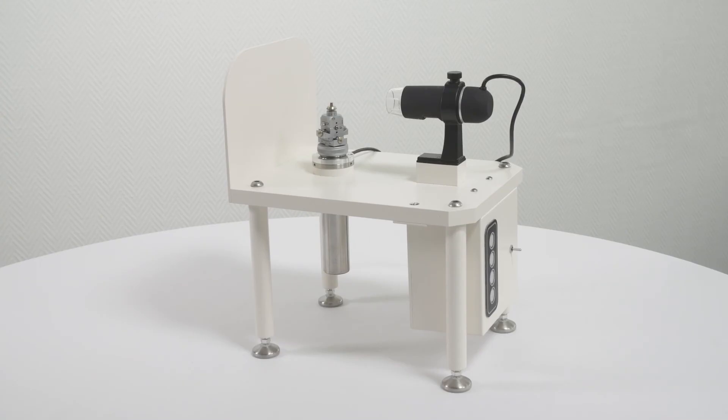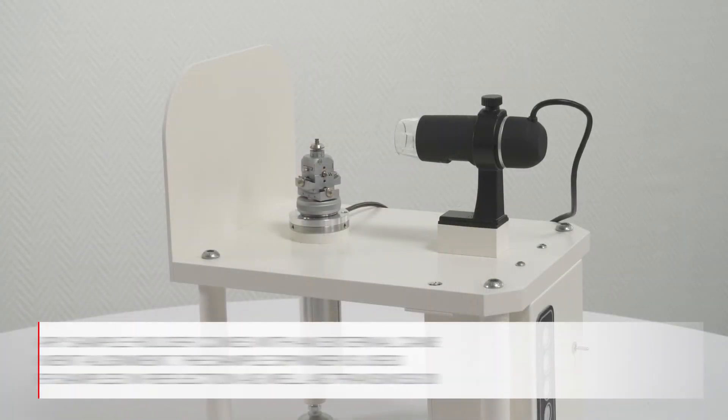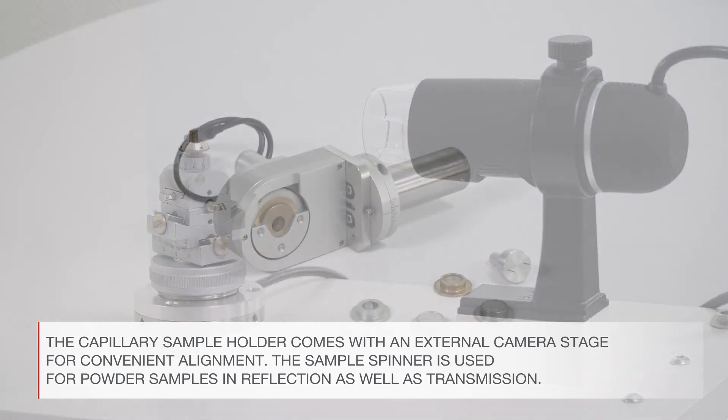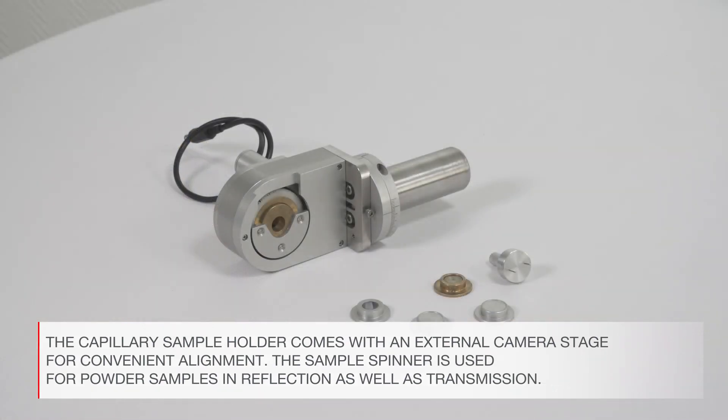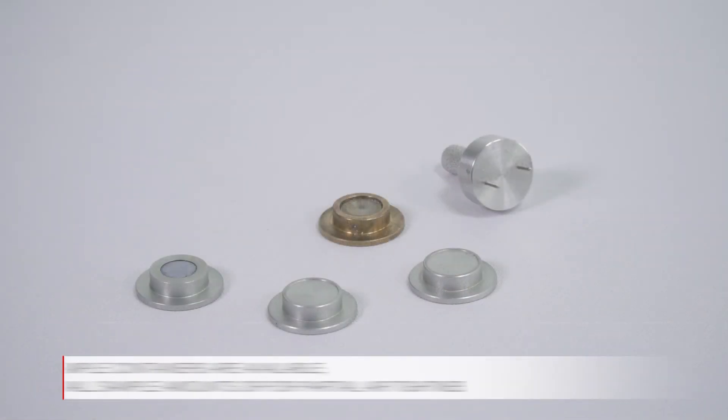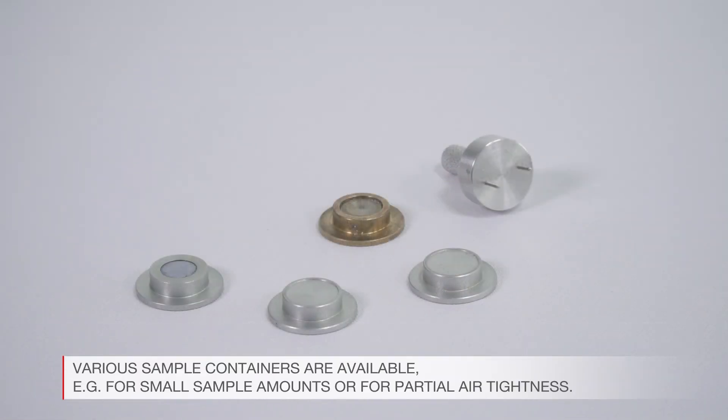The capillary sample holder comes with an external camera stage for convenient alignment. The sample spinner is used for powder samples in reflection as well as transmission. Various sample containers are available, for example for small sample amounts or for partial air tightness.